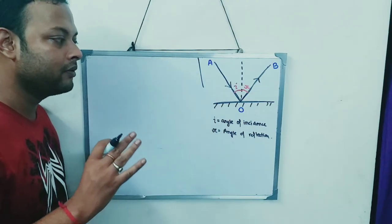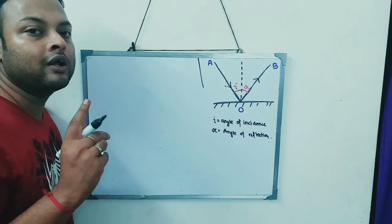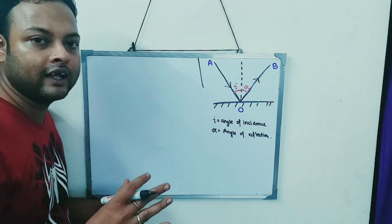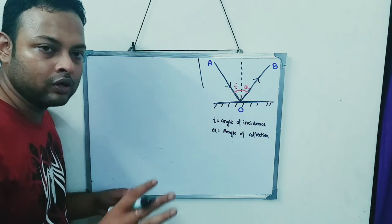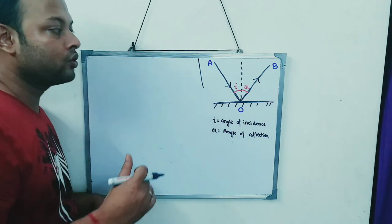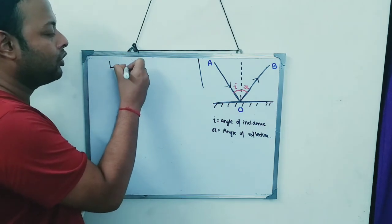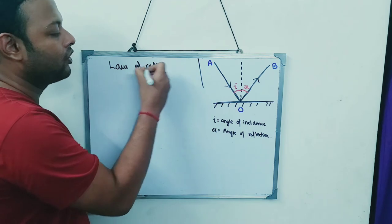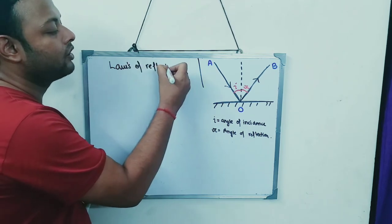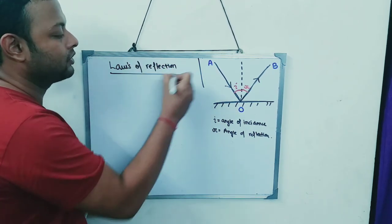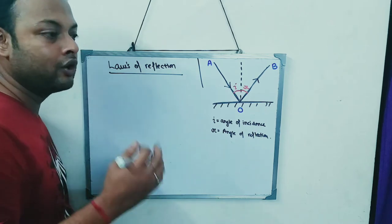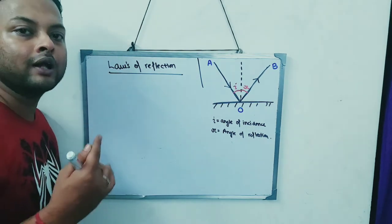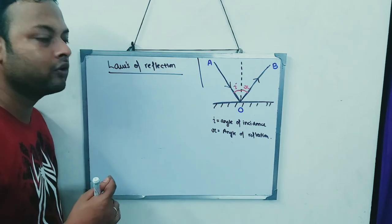Now I have to introduce a law. A law consists of certain guidelines which control this whole reflection process. What I need to know is called the laws of reflection. There are two laws, so I will discuss them one by one so you can understand more clearly.